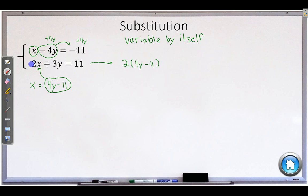So we took care of this. The 2 is right here. Instead of x, we have what's in the circle, 4y minus 11. So what comes next? Plus 3y equals 11. And that was sort of the important bit because now I have one equation with only y's in it.